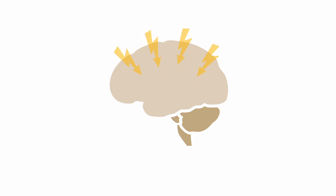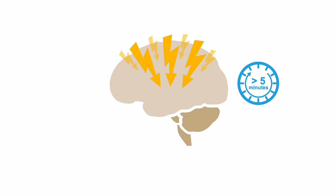When seizures persist for more than five minutes or don't respond to first and second line anticonvulsants, the patient is considered to be in status epilepticus. Untreated, this can be fatal or leave a patient with permanent neurological injury. But don't panic — management of status epilepticus is relatively straightforward and orderly and is usually very effective.